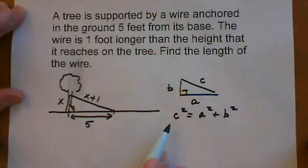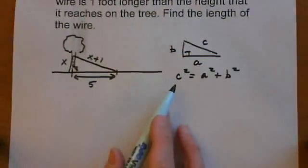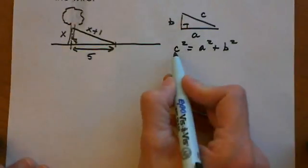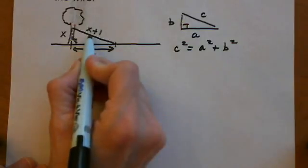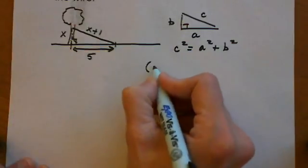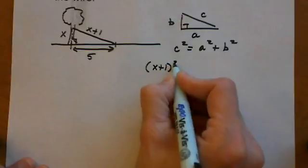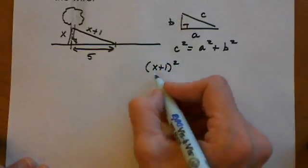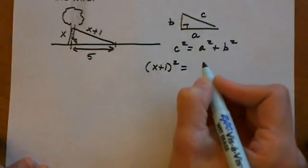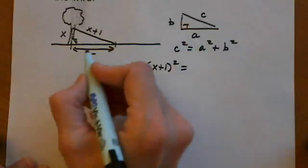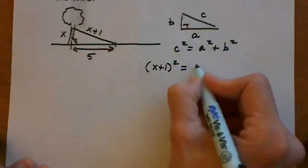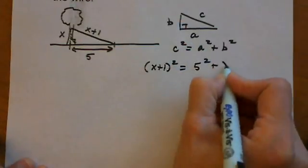We're going to use this to make an equation with x in it. So c squared would be (x+1)². Be sure to put parentheses around x+1 and square the entire quantity. This equals a² plus b², so the legs squared: 5² plus x².